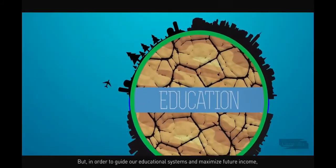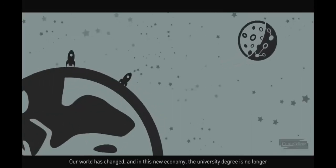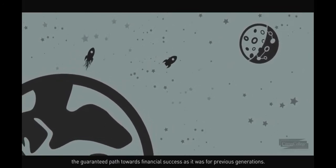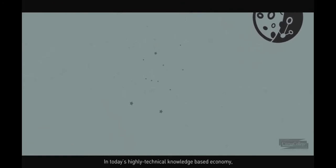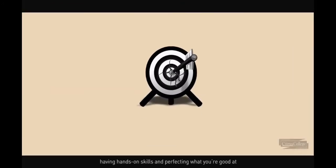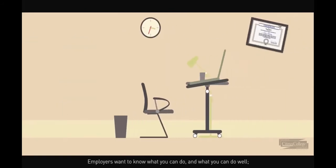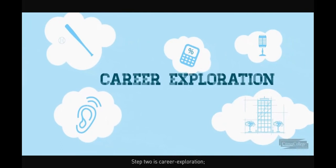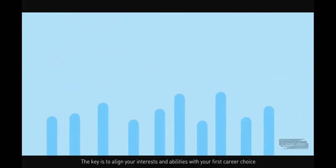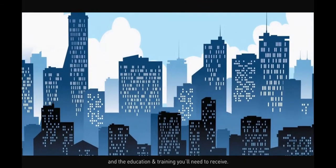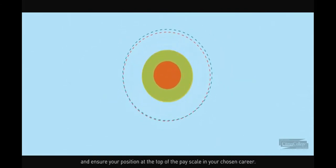Education is core to our economy, but in order to guide our educational systems and maximize future income, we must understand the misalignment between education and the work market. A university degree is no longer the guaranteed path towards financial success it was for previous generations. Even if you earn one, that education alone may not be enough. In today's highly technical, knowledge-based economy, having hands-on skills and perfecting what you're good at can be more valuable than getting a degree simply to get one. Employers want to know what you can do and do well, not just what degree hangs on your wall. It's about career exploration: understand the jobs available, the income ranges they pay, and evaluate the skills they require. Identifying alignment between your interests, abilities, your first career choice, and the education and training you'll need will help bring your future into focus and ensure your position at the top of the pay scale in your chosen career.